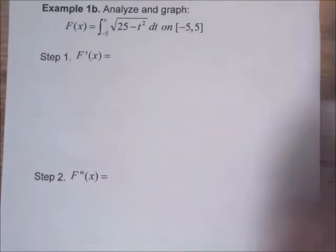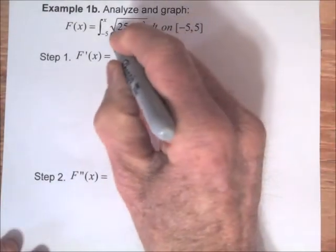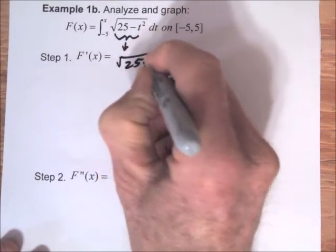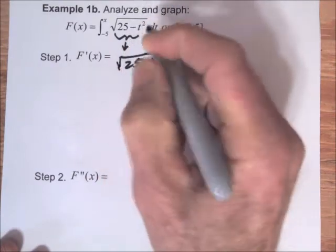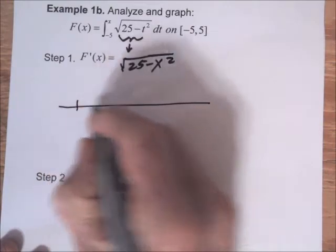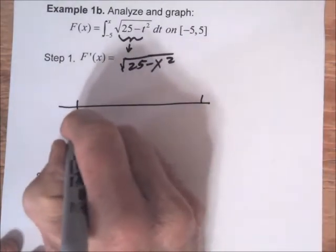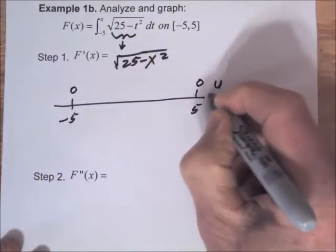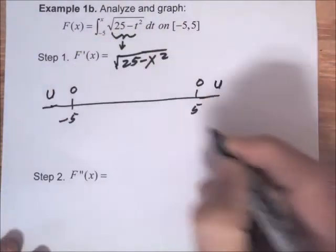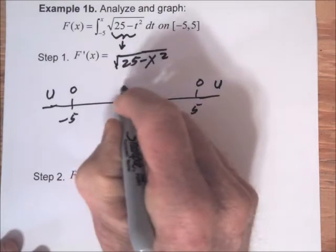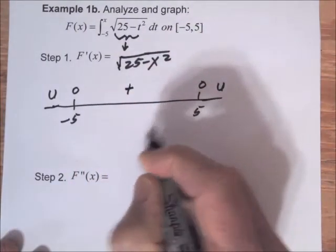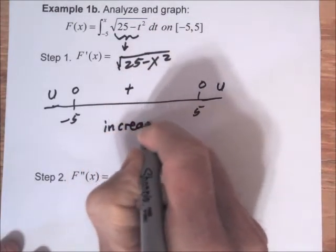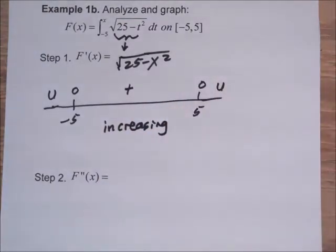The first derivative is just going to be the integrand evaluated at x. So F prime of x equals the square root of 25 minus x squared. This is defined between negative 5 and 5. It's going to be 0 at negative 5 and 5, undefined if x is less than negative 5 or greater than 5, and in between negative 5 and 5 it's going to be positive — this is the positive square root — so the answer will be positive. So capital F is going to be increasing on the interval from minus 5 to 5.